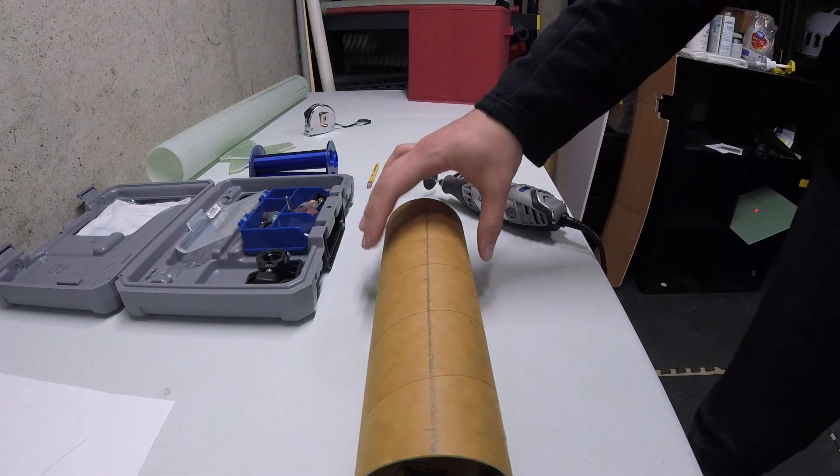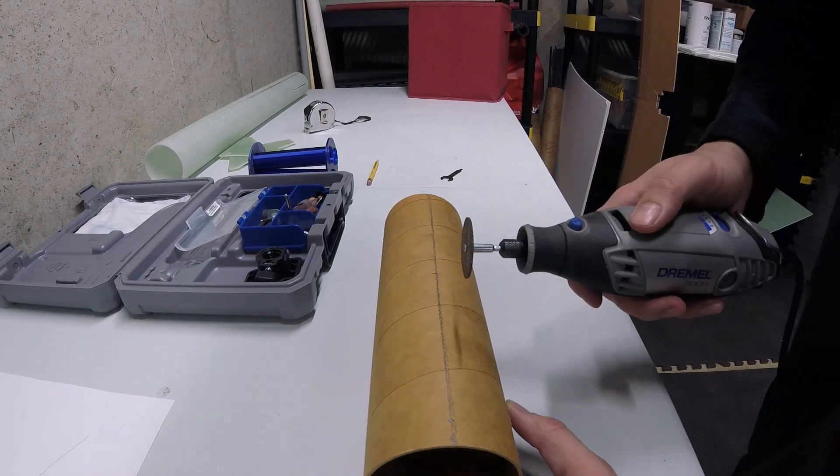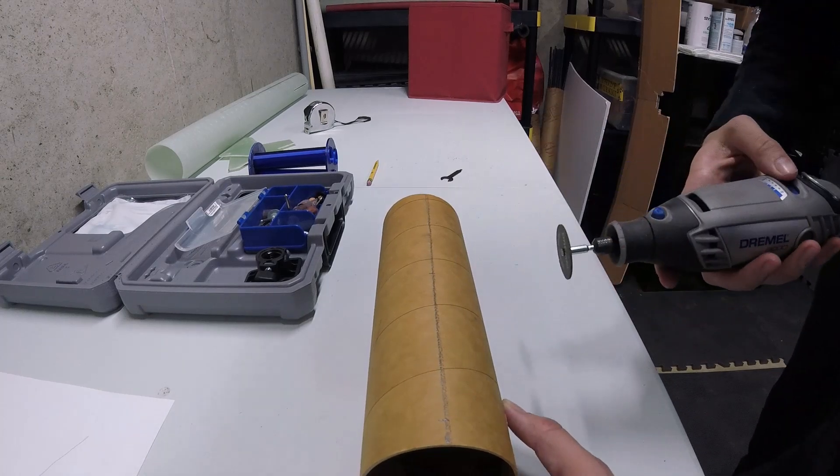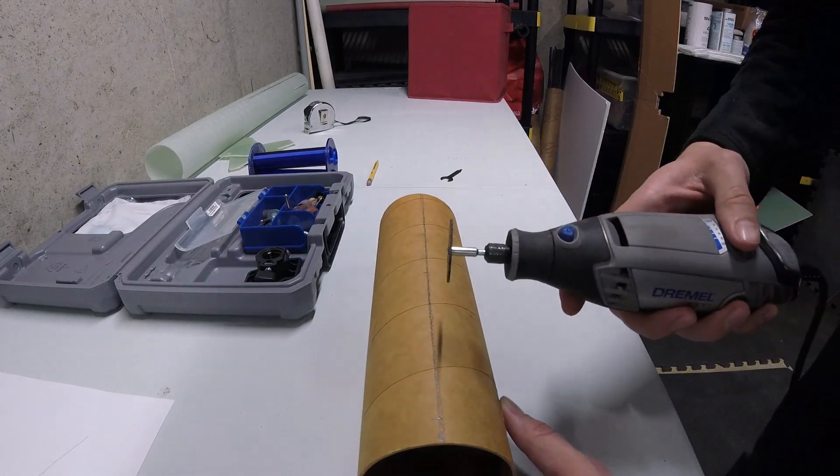Before you get started, always remember with the Dremel you should be wearing safety glasses all the time. Especially when you're working with fiberglass, you need to be wearing a respirator. For cardboard it's not quite as necessary, but you should anyway. So let's get going on this.